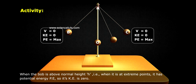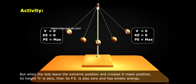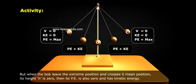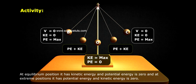So its KE is zero. But when the bob leaves the extreme position and crosses the mean position, its height H is zero. Then its PE is also zero and it has kinetic energy. At equilibrium position, it has kinetic energy and potential energy is zero.